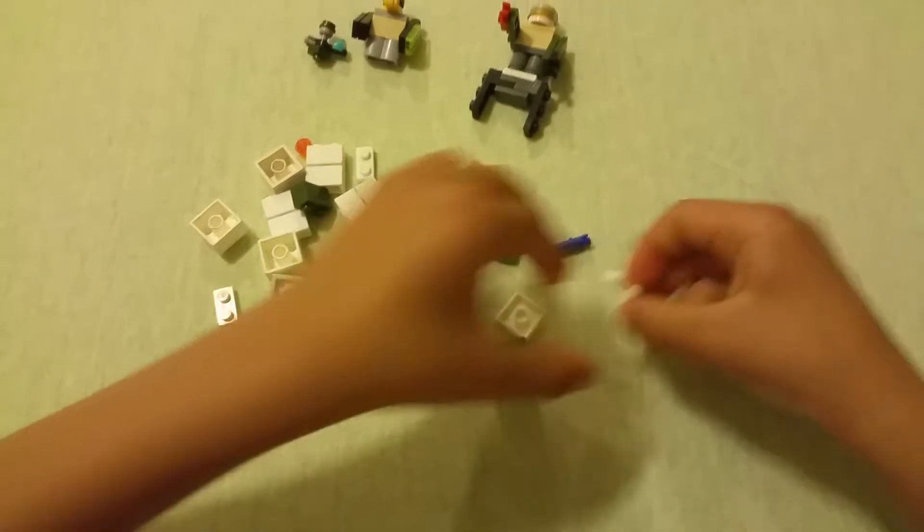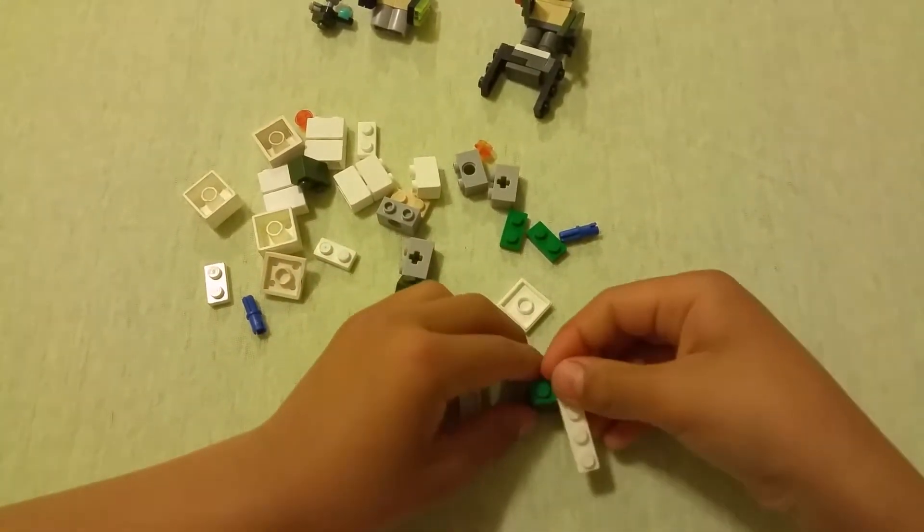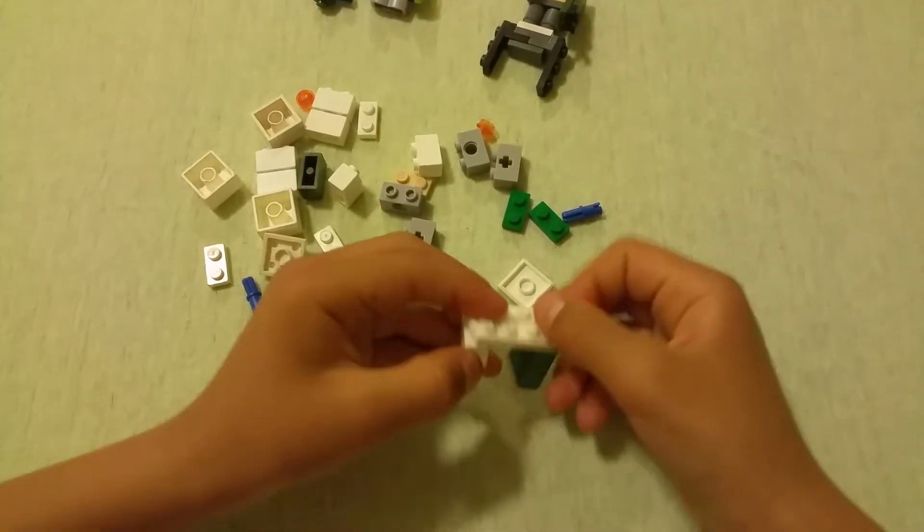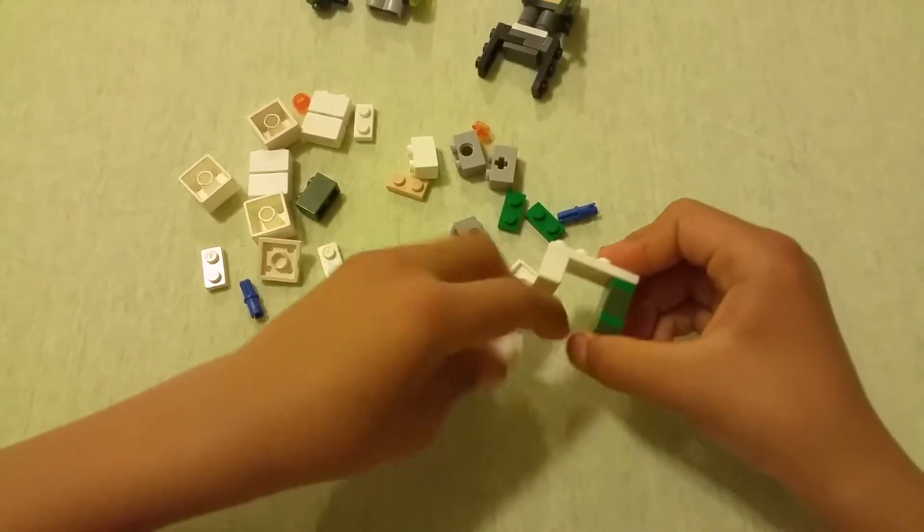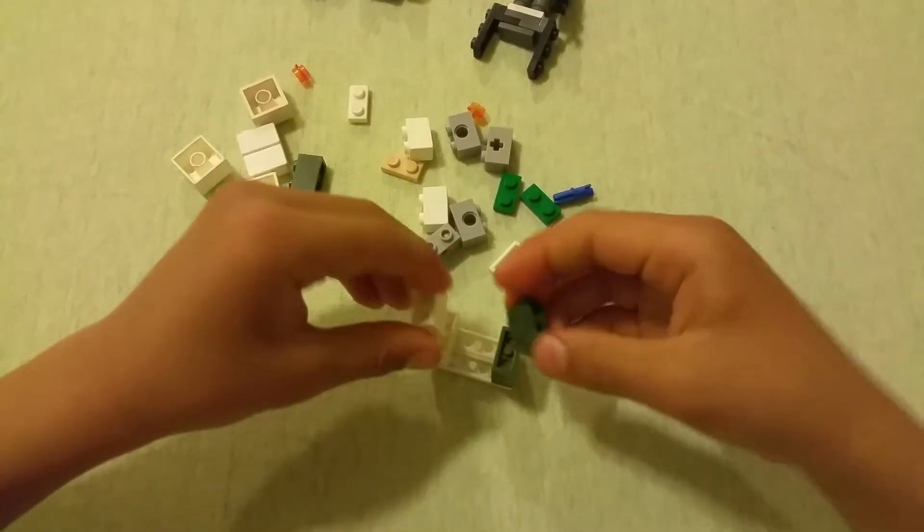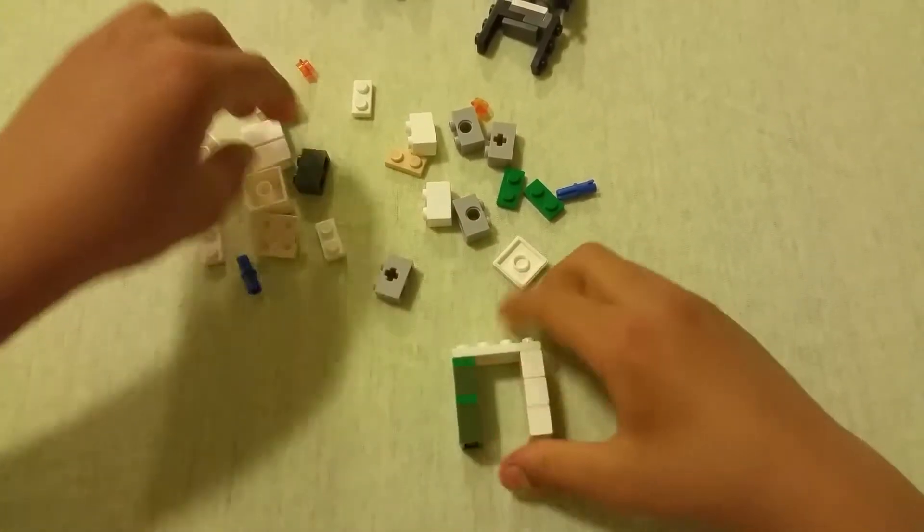You'll notice that mine has a little face on there. I'm going to do the other side first. 1x2 brick, 1x2 brick, and another 1x2 brick. Then we're going to stick our other 1x2 brick on the other leg.